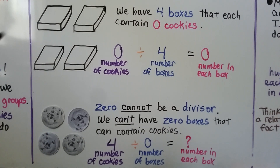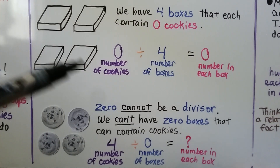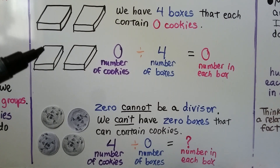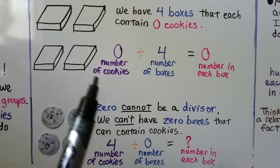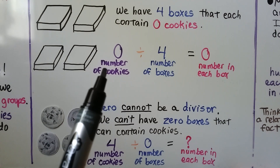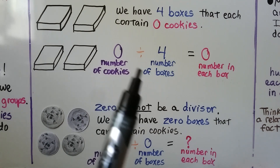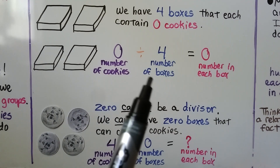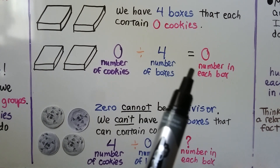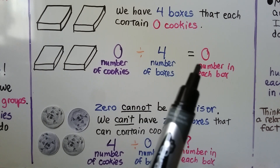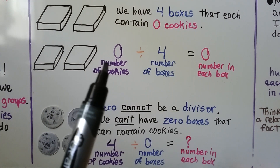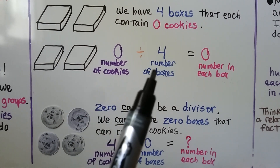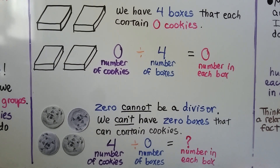Here we have 4 boxes that each contain 0 cookies. We have 0 cookies divided into 4 boxes. There's going to be 0 cookies in each box. Here, 0 is the dividend and 4 is the divisor.